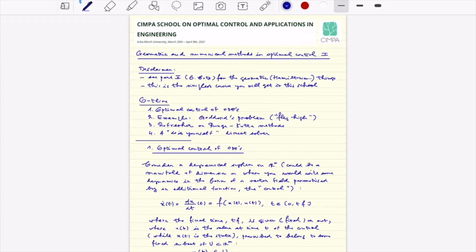In section three we will have a short refresher on Runge-Kutta methods that we will use to discretize very simply an ODE system. And finally I will try to give you some hints about how to do yourself a solver by direct transcription, transforming an optimal control problem into a mathematical programming problem, an optimization problem in finite dimensions.